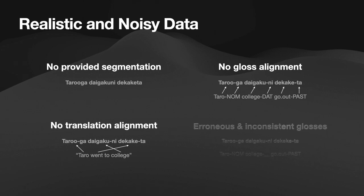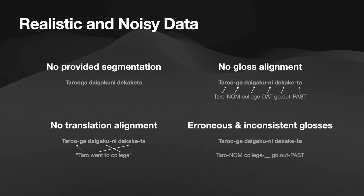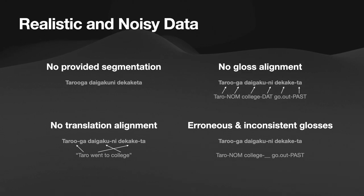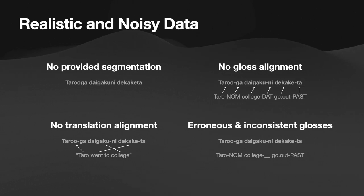And finally, the majority of IGT corpora do not have perfectly consistent glossing, but may omit glosses, use different glossing systems, or gloss words incorrectly. Our model will need to adapt to this noisy data and still produce the best possible output. And with these constraints, our model should be more practical for a real-world documentation setting, as the vast majority of existing IGT has one or more of these issues.